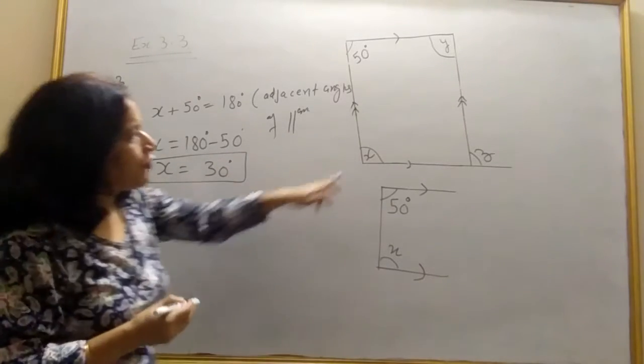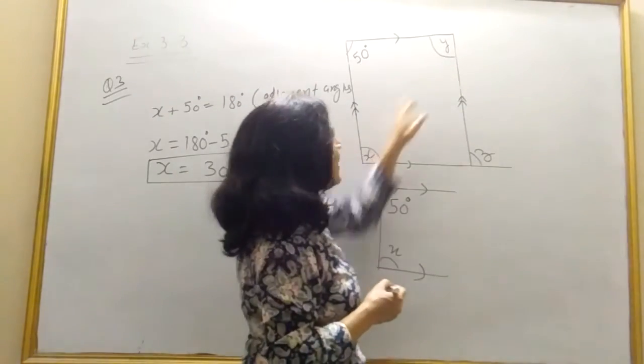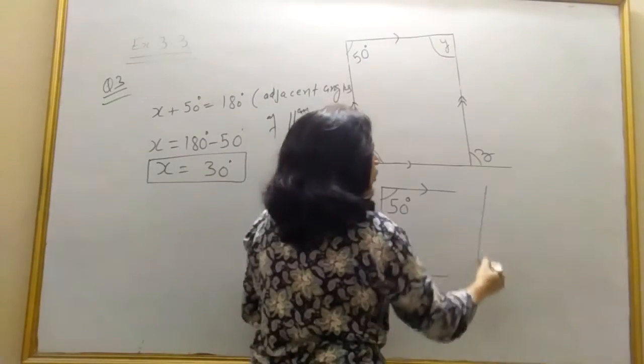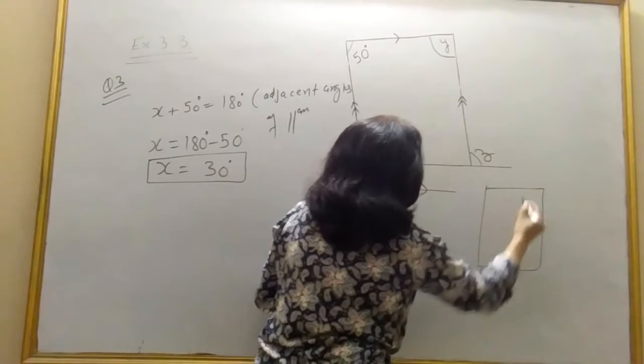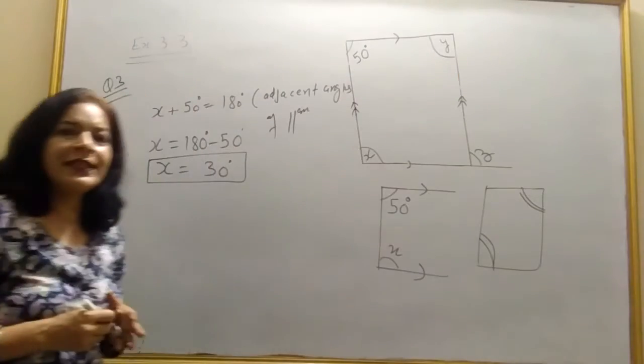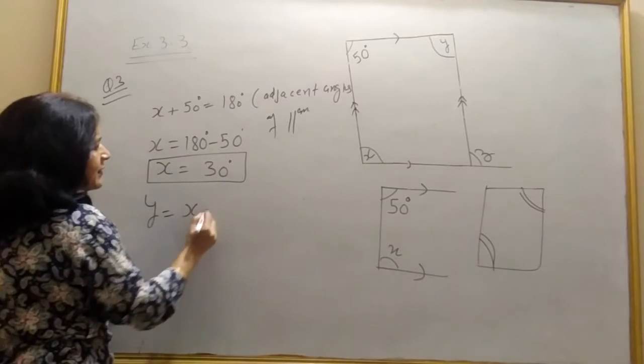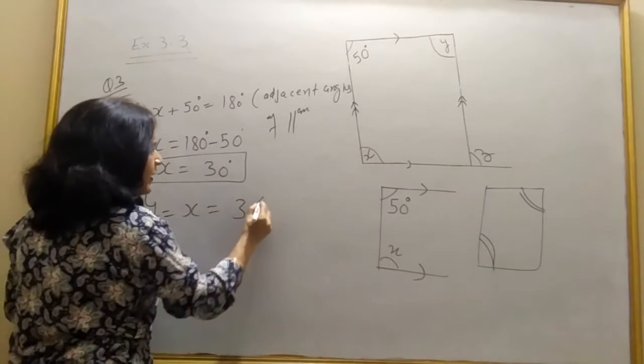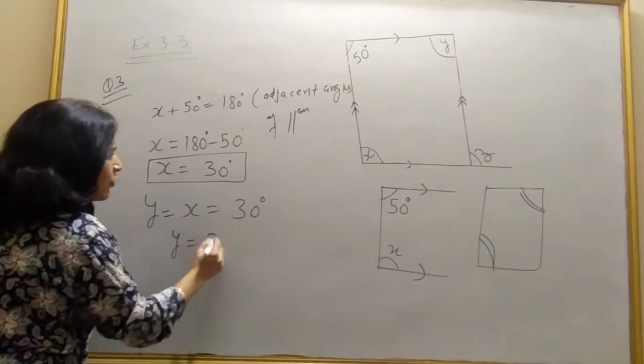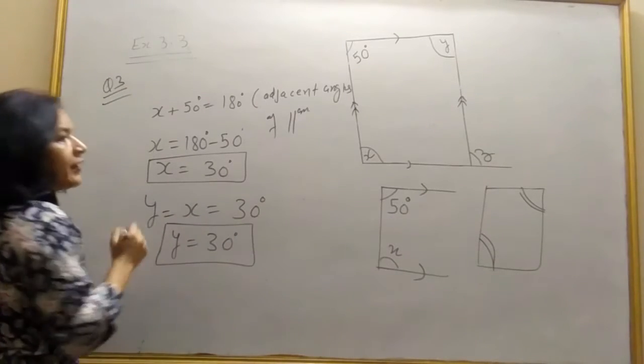Now if you find x you can easily find y, because x and y are opposite angles of parallelogram. This angle will be equal to this. Opposite angles are equal. So y is equal to x, also equal to 130 degrees.